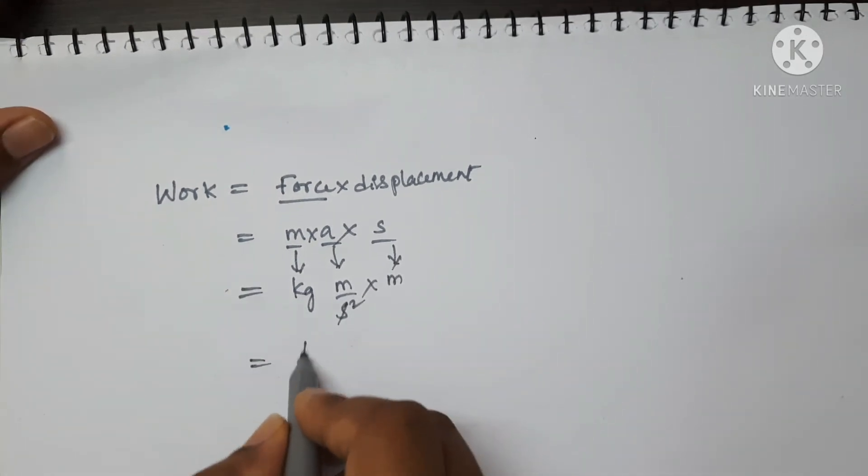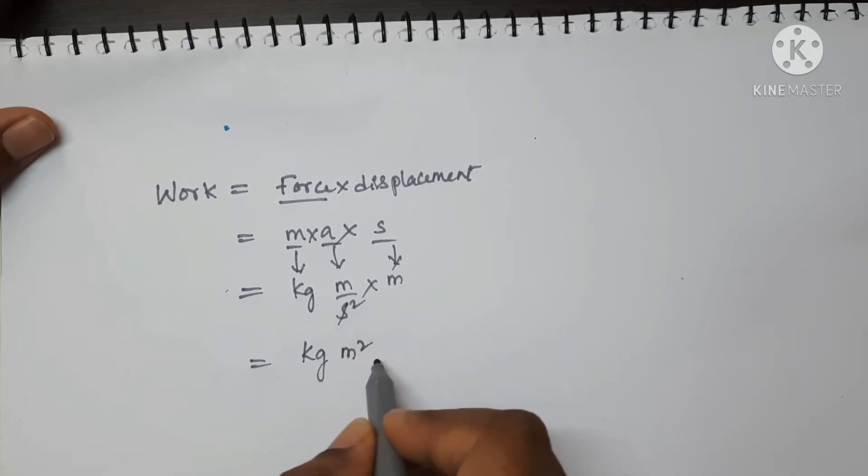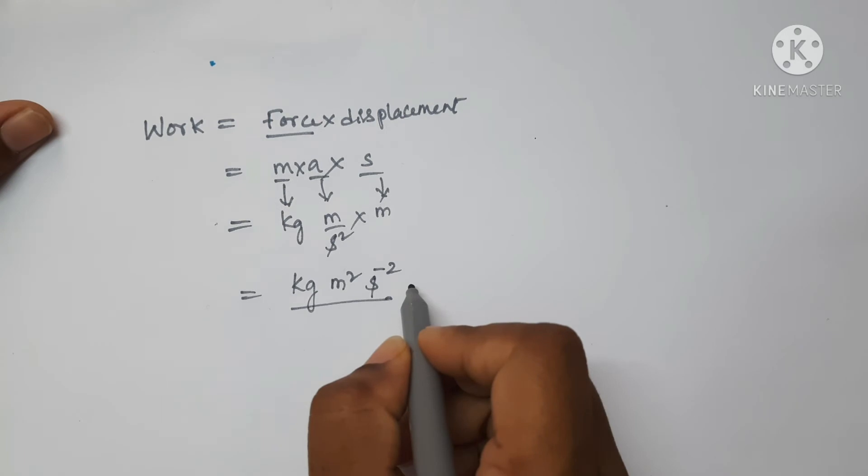Now this is equal to kg meter into meter, meter square. I am writing denominator on the numerator, so this is S to the power of minus 2. Now write, this is the SI unit for work.